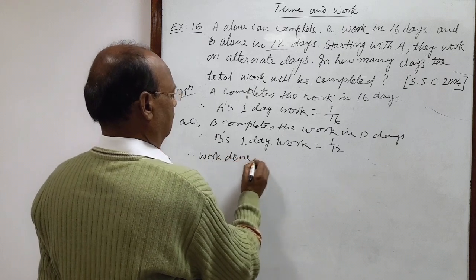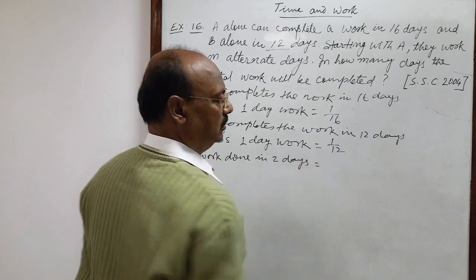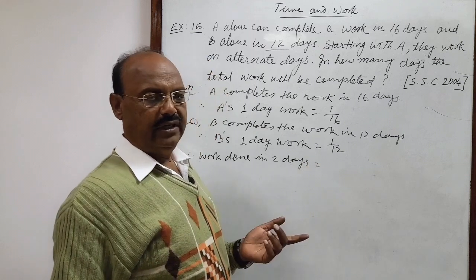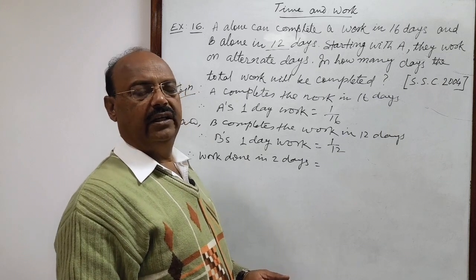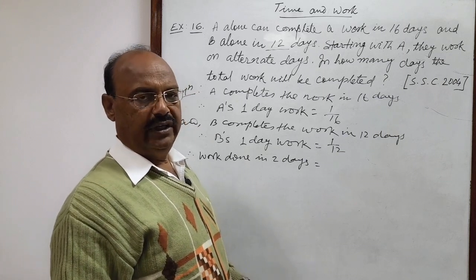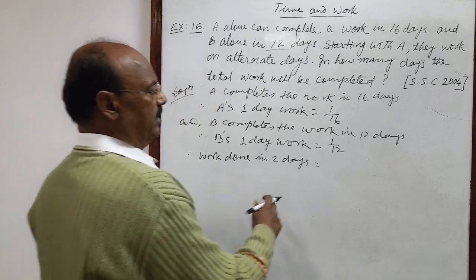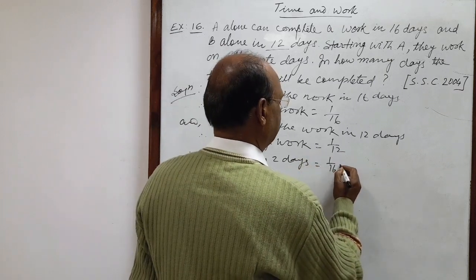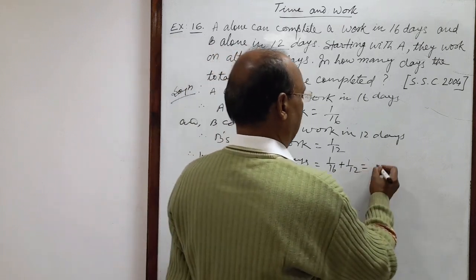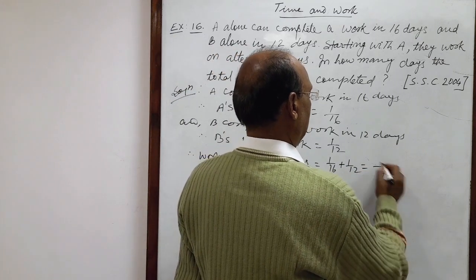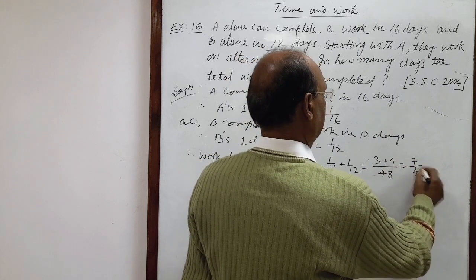In two days, first day A is working, second day B is working, again alternatively third day A will work and fourth day B will work. So work done in two days will be 1/16 plus 1/12. Let us simplify it. LCM will be 48. 3 plus 4, this is equal to 7/48.